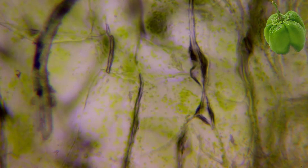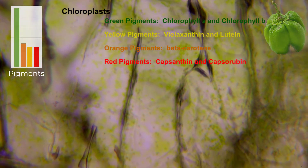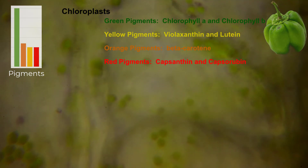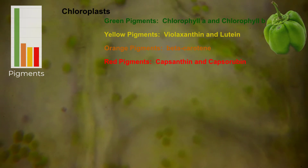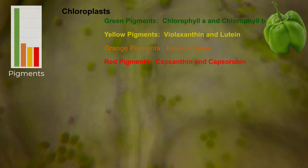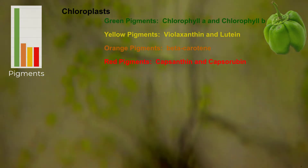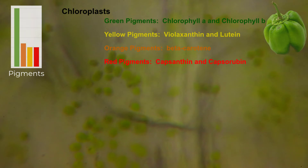These chloroplasts have four main types of pigments: the green pigment, the yellow, the orange, and the red. In the chloroplast, all four pigments are already there, but the concentration of the green pigments is very high compared to the other pigments. That's why these chloroplasts appear to be green.